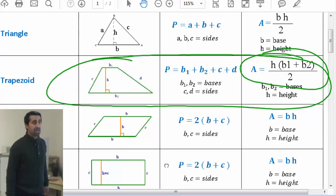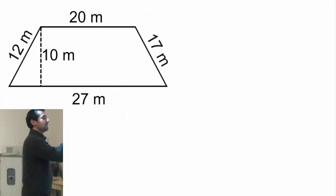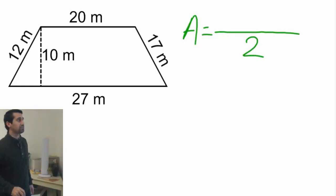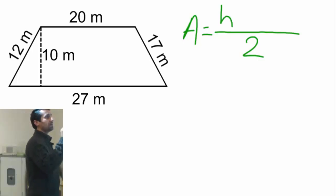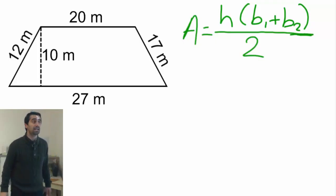And the formula is area equals H, open bracket, B1 plus B2, close bracket, divided by 2. It's a little complicated, but doesn't matter. Let's go ahead and copy that formula. Alright. Area equals... Make the division line. First, I saw divide by 2. And then, height, open the bracket, B1 plus B2, close the bracket. So that's the formula.